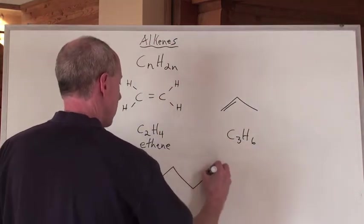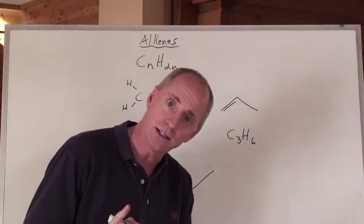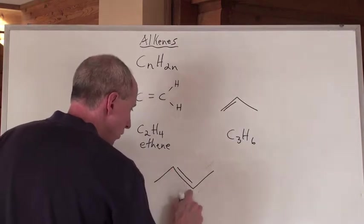Now what does that make this? One, two, three, four carbons long. That's C4H8. There would be one hydrogen here, one hydrogen here coming off, and then there would be three hydrogens here and three here.